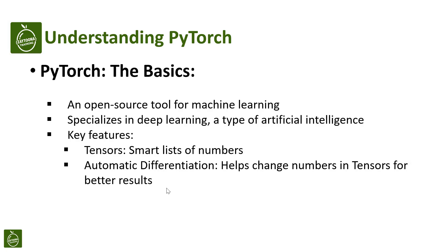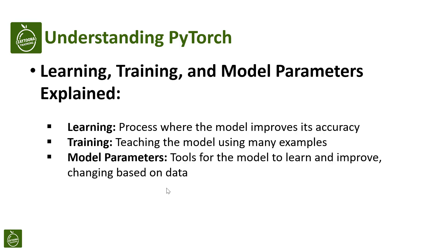PyTorch is a tool many people use for machine learning, especially for deep learning, which is a type of artificial intelligence. It's known for two big features: tensors, which are like smart lists of numbers, and automatic differentiation, which is a way for PyTorch to figure out how to change numbers in the tensors to get better results.